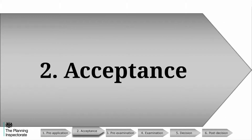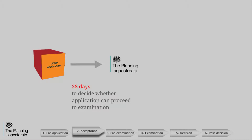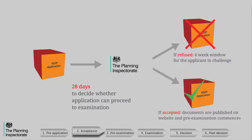After the pre-application stage comes the acceptance stage. It is at this point that the Planning Inspectorate moves to the heart of the process. The application is formally submitted by the applicant to the Planning Inspectorate. We must decide within 28 days whether all relevant documentation has been submitted to enable the application to proceed. If we refuse the application, there is a six-week window for the applicant to raise a legal challenge. If we accept the application, all documents are published on a website and the process moves to the next stage.